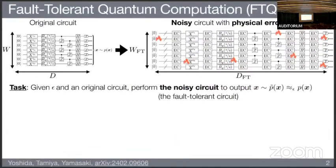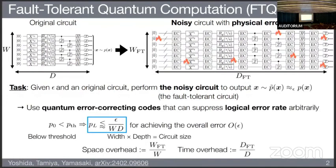Let me begin with the introduction of fault-tolerant quantum computation. The aim of FTQC is to reduce physical errors occurring during quantum computation. Given a precision epsilon and a given original circuit, the task is to perform a noisy circuit to simulate the probability distribution of the original circuit within the given precision epsilon. We can use a quantum error correction code to suppress the logical error rate arbitrarily. The threshold theorem guarantees that if the physical error rate is below a certain threshold value, we can suppress the logical error rate to an arbitrarily small number. By suppressing the logical error rate below epsilon divided by the circuit size, we can achieve the task of FTQC.